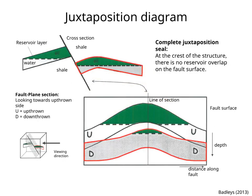Here is another example. The Allen diagram shows the downthrown (D) and upthrown (U) reservoirs in contact with the fault. At the crest of the structure, there is no reservoir overlap on the fault's surface. This is clearly illustrated by a cross-section at that location. Therefore, at the crest of the structure, the oil will not migrate across the fault. The degree of filling of the trap is most likely controlled by spill points away from the fault.